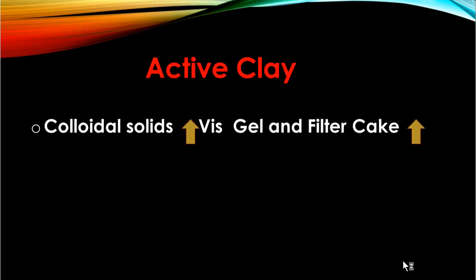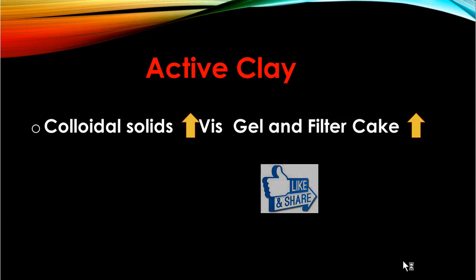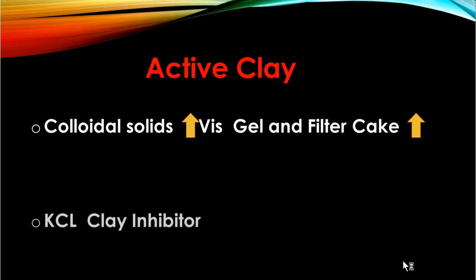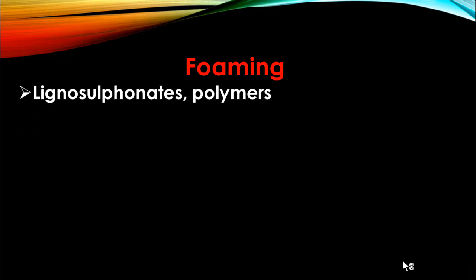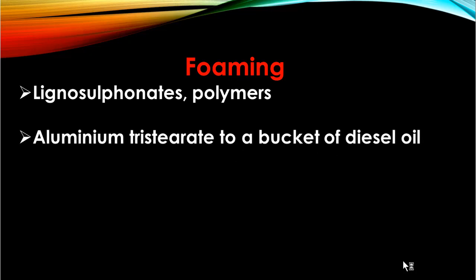Active clay during drilling will tend to build colloidal solids in the drilling fluid, causing high viscosities and gels and often giving a thick filter cake. Clay inhibitors such as calcium chloride may be used to reduce the effect of swelling clay. Foaming can occur with several drilling fluid additives such as lignosulfates and polymers, particularly when a large batch of drilling fluid is prepared. Foam can be easily reduced by adding aluminum tristearate to a bucket of diesel oil and mixing it into the drilling fluid.